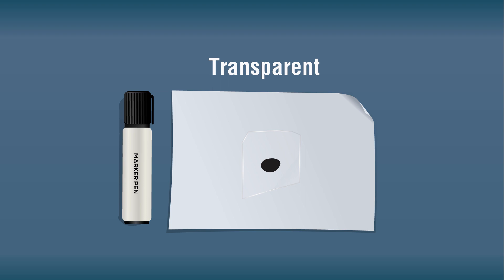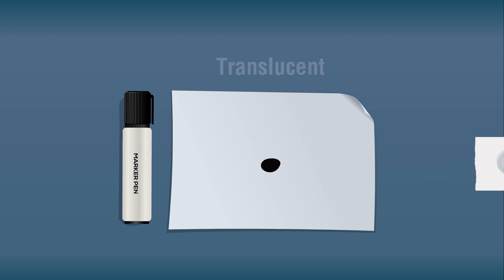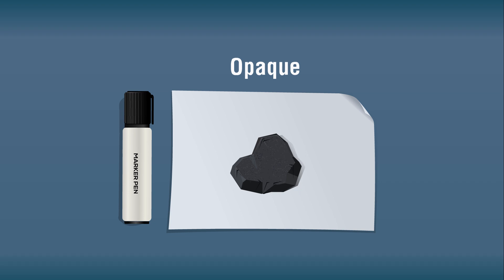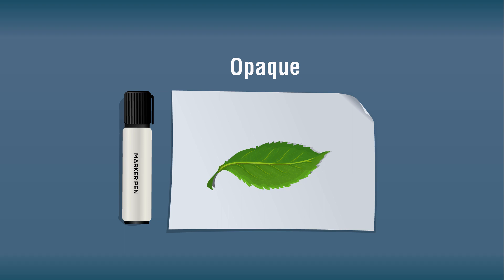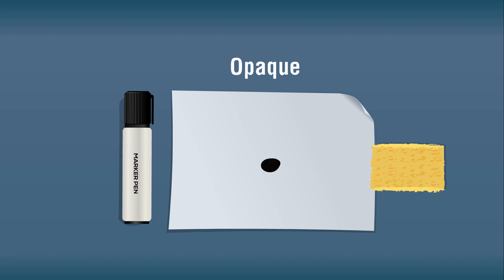Materials through which you can see clearly are transparent, such as a glass piece — they allow light to completely pass through them. Materials through which you cannot see clearly are translucent, such as oil-coated paper. Materials through which you cannot see at all are opaque. Classify each material as transparent, translucent, or opaque.